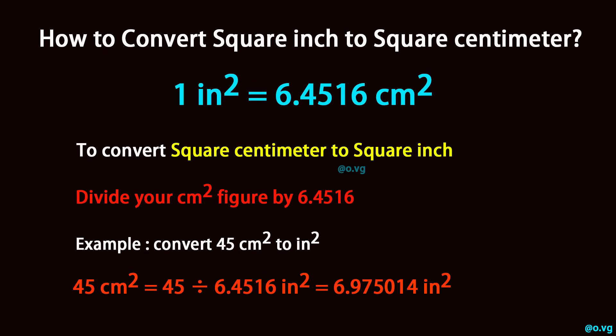To convert square centimeter to square inch, divide your square centimeter figure by 6.4516.